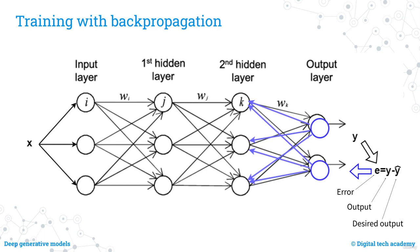The process of training a neural network involves a technique called backpropagation. This involves presenting the network with input data and the corresponding desired output, then adjusting the network's parameters to minimise the error between the desired output and the output produced by the network. This error is calculated and propagated back through the network, allowing the network to learn and improve its performance.